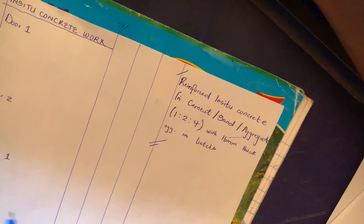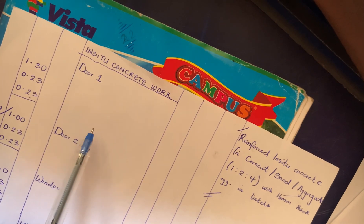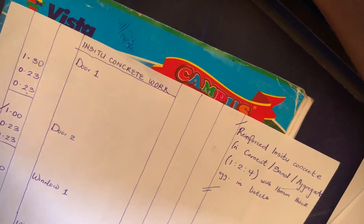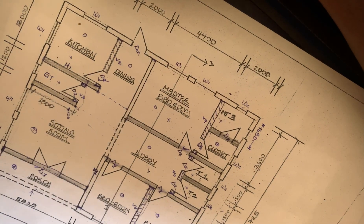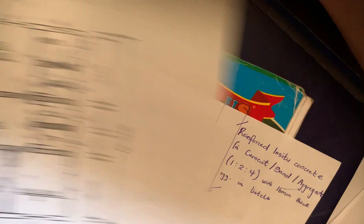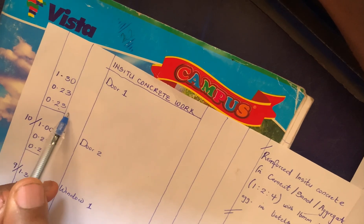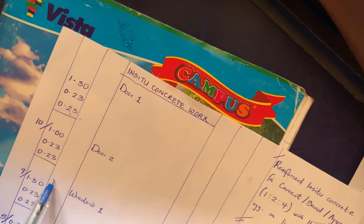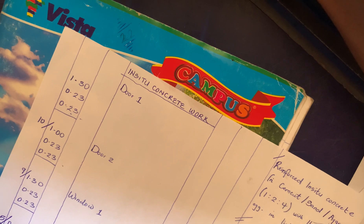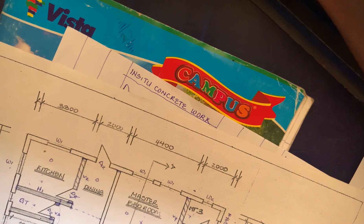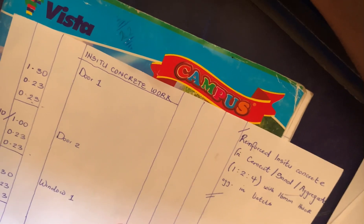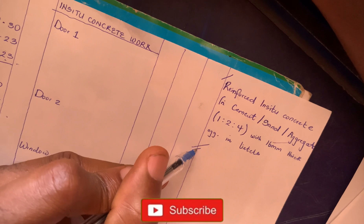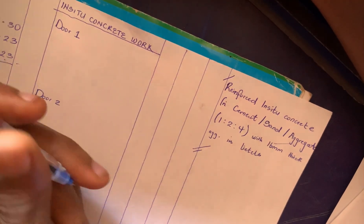Before I end this video, I want you to have in mind that sometimes lecturers try to be smart. Instead of giving you 225 mm as the thickness of your wall throughout, they might make the external wall 225 mm and the internal wall 115 mm. This means when calculating for your lintels, some lintels will have a thickness of 0.23 and others 0.15, because the thickness of the lintel is determined by the thickness of the blockwork. Keep that in mind so you don't run into any issues. We've come to the end of the video — hope you enjoyed it. Don't forget to like, share, and subscribe. Thank you, see you in the next video.